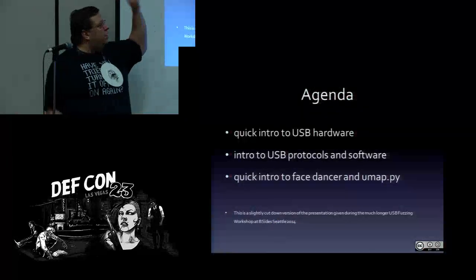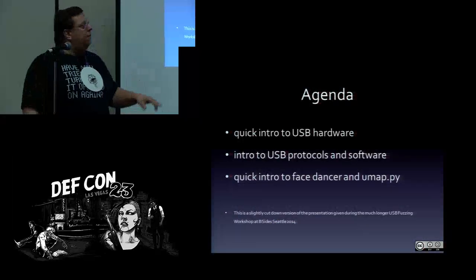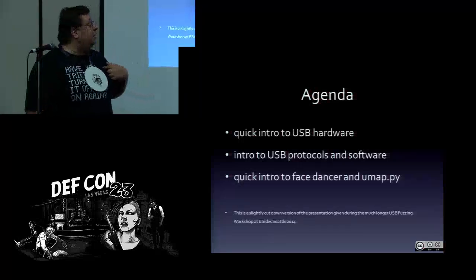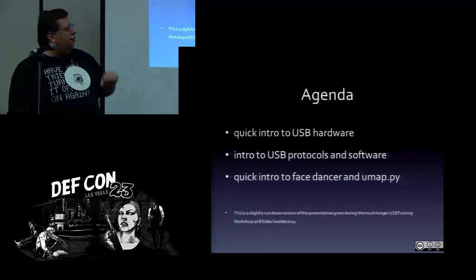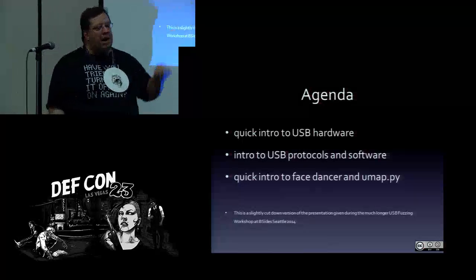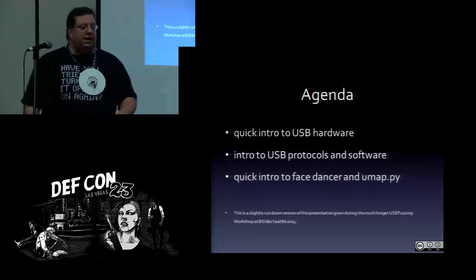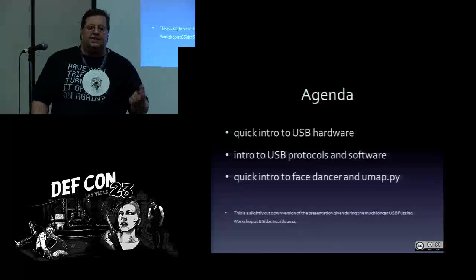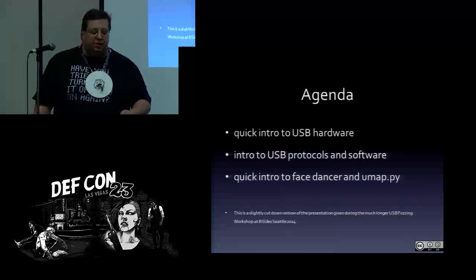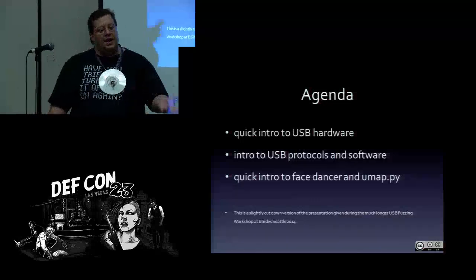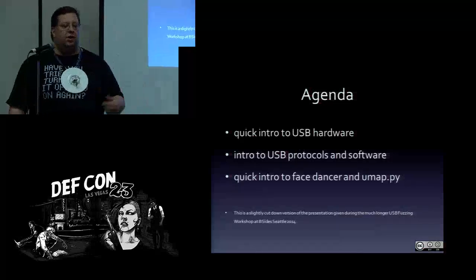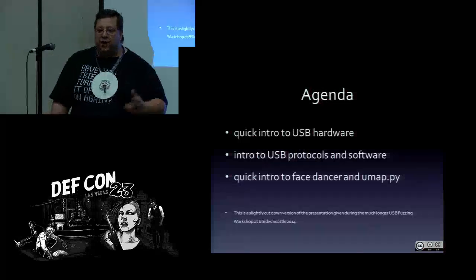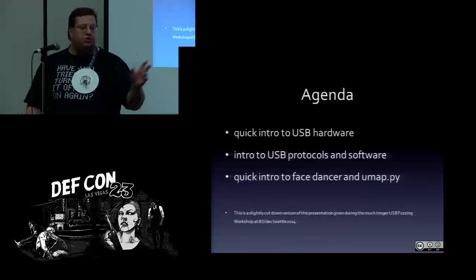Quick agenda: we'll look at USB hardware and software, talk about the protocols, and then look at how we get in. The tools I use are the FaceDancer21 and UMAP. I like this setup because you don't have to be uber-elite to do this. The FaceDancer21 is a dongle made by Travis Goodspeed — it will take care of creating packets for you; you can do the fuzzing and all sorts of tricks. UMAP is a very nice Python fuzzing tool you can get right off GitHub.